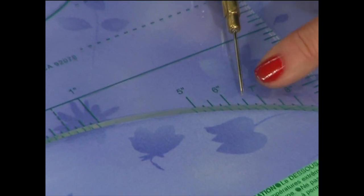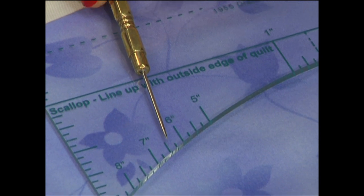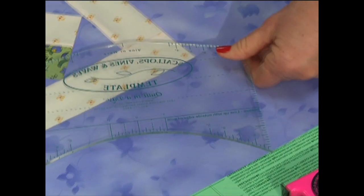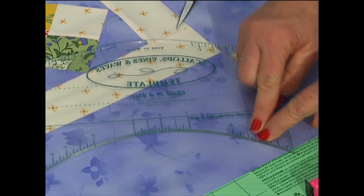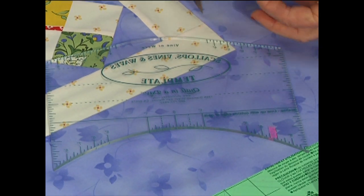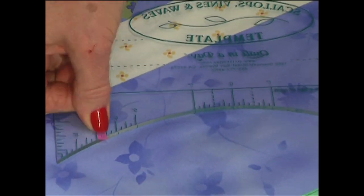So let's just take the scallop ruler and mark off at six and a half inches. If you just take some glow line tape and place it beside six and a half, you'll get your mark correct every time.